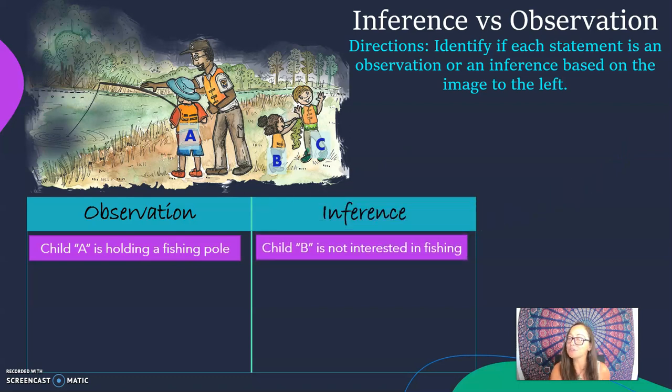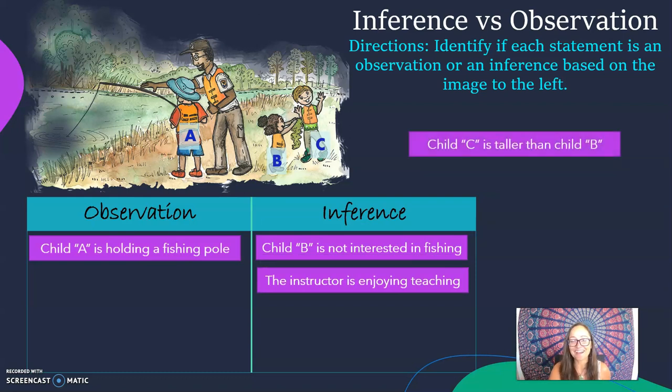Child B is not interested in fishing. Well that's going to be an inference because what you see is that child B is not even looking at the lake, doesn't seem interested, but that's kind of your opinion on what you're seeing. Maybe she just got done fishing for a half hour and now it's child A's turn to learn. The instructor is enjoying teaching. He may just be smiling, you don't know if maybe he's frustrated with little kids.